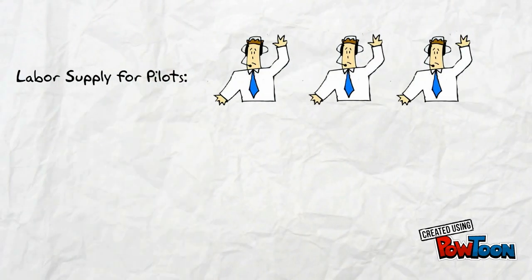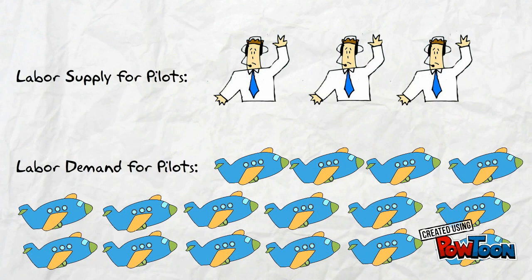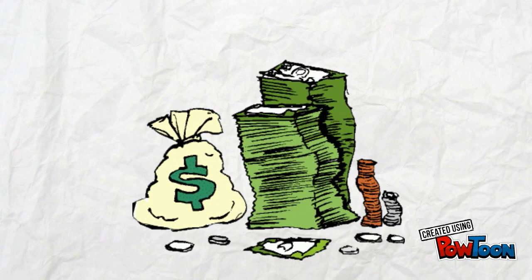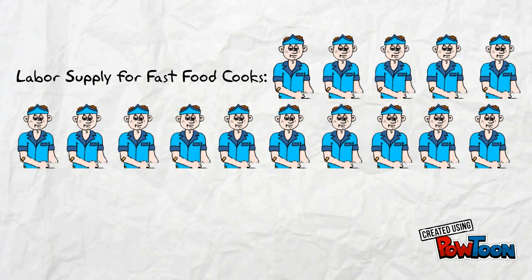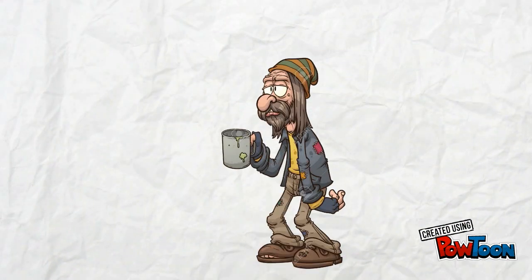Wage differentials can arise on either the supply or the demand side of labour markets. For example, there are currently only 3 pilots looking for jobs, but the demand for pilots is high — not 3 job opportunities, but tens of job opportunities. Therefore, labour demand is very strong, yielding a much higher salary. In contrast, the labour supply of fast food cooks is very high compared to the demand for fast food cooks, which is very low. So there is a lot of competition in the labour market for fast food cook positions, yielding a much lower salary.